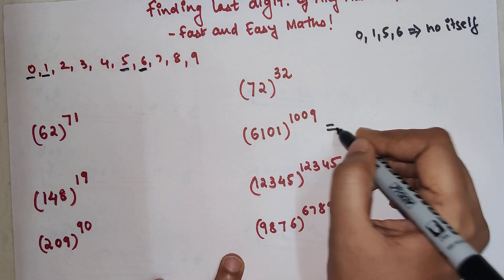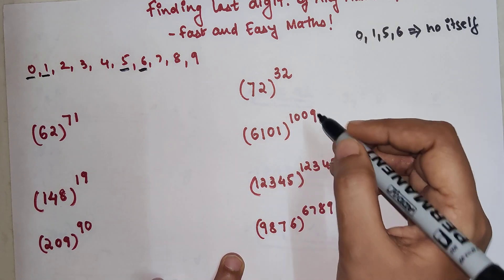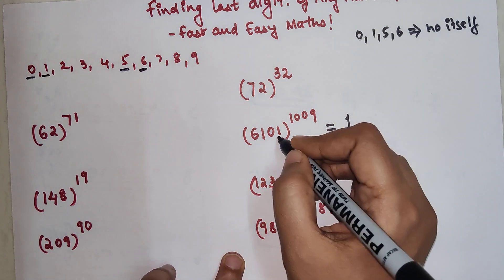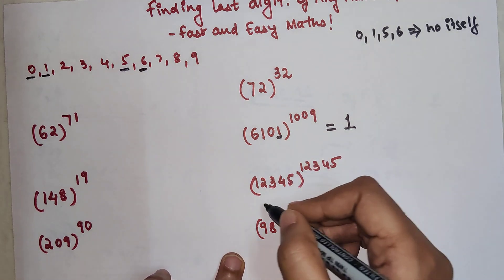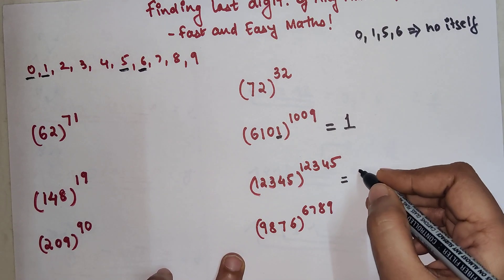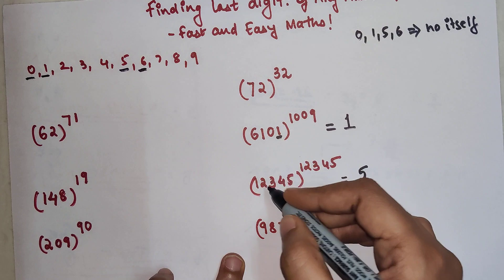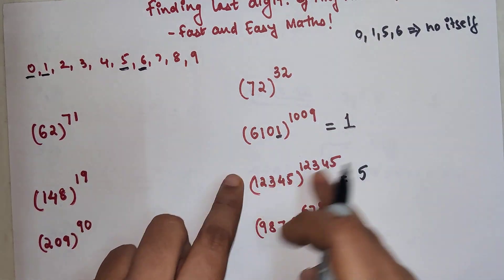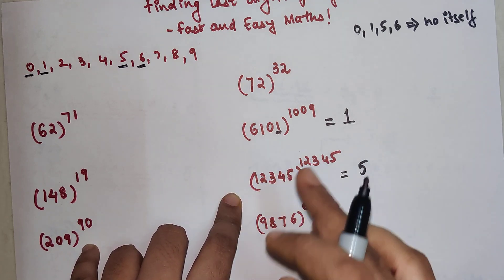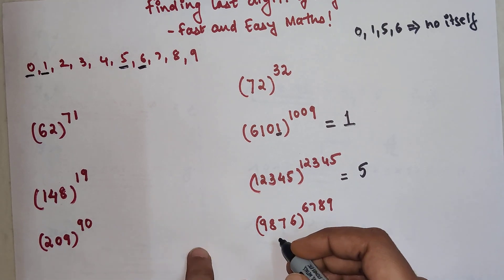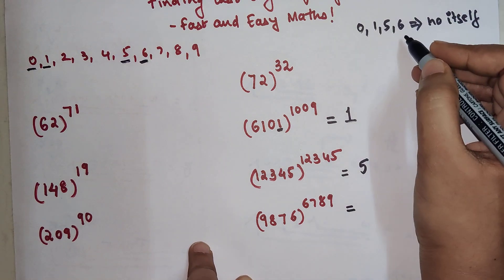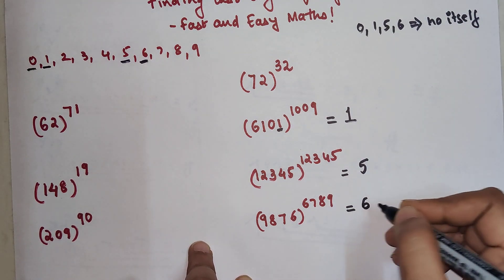For example, 6101 raised to 1009—this looks so big, but the unit digit is nothing but 1. Here, 12345 raised to 12345 will always have a last digit of 5. For 9876 raised to 6789, because the last digit is 6, your final answer will always be 6.